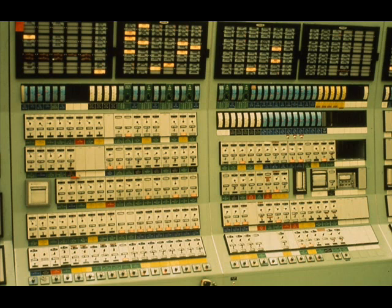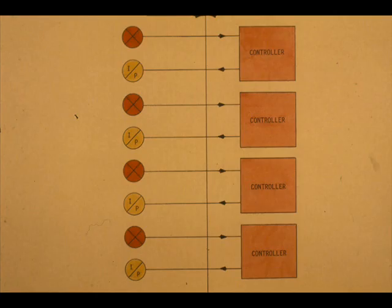Control centers contain hundreds of instrument loops. Therefore, it would be very impractical to run a separate two-wire cable from each transmitter and I to P to the associated controller. So, multi-pair cables are used to connect field and control center loop items to each other.